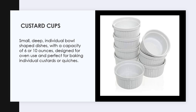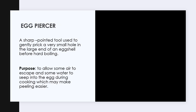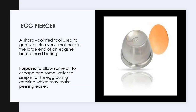Custard cups are small, deep, individual bowl-shaped dishes with a capacity of 6 or 10 ounces, designed for oven use and perfect for baking individual custards or quiches. An omelette pan is a non-stick, shallow, slope-sided pan usually 7 to 10 inches in diameter. A double omelette pan consists of two shallow rectangular or semicircular pans attached by hinges, each pan with a handle. An egg piercer is a sharp-pointed tool used to gently prick a very small hole in the large end of an eggshell before hard-boiling, allowing air to escape and water to seep in during cooking, which makes peeling easier.